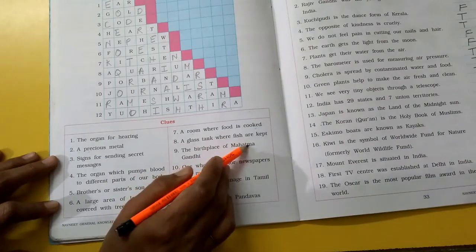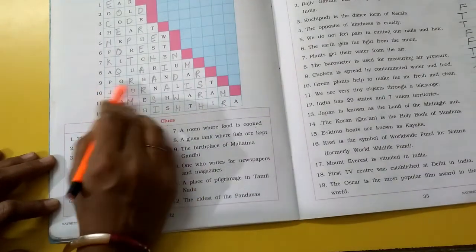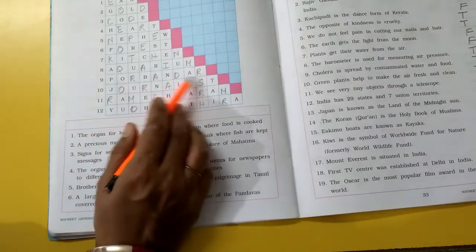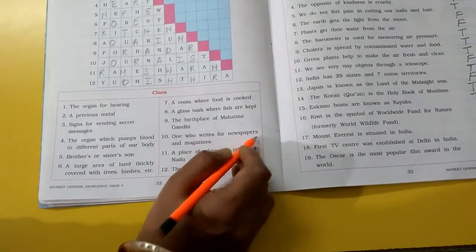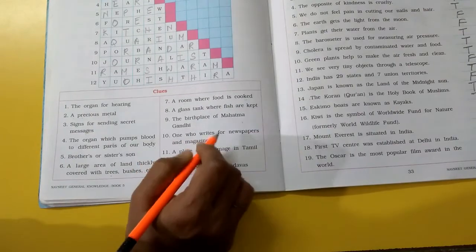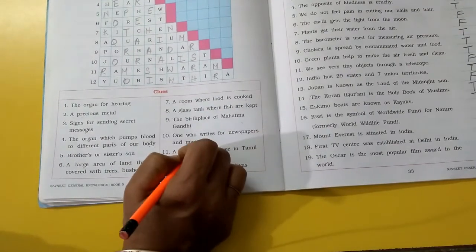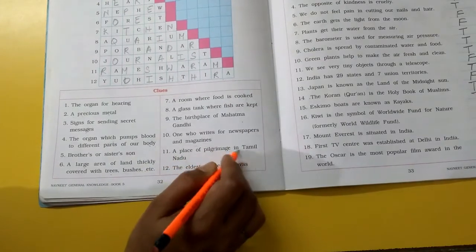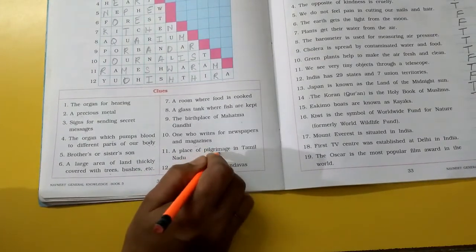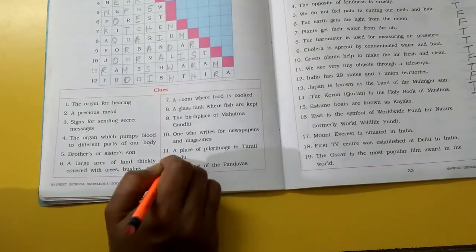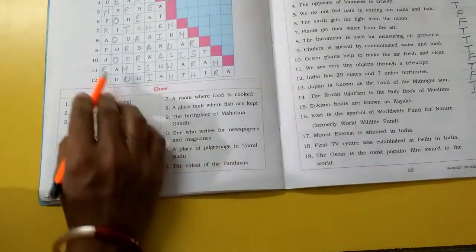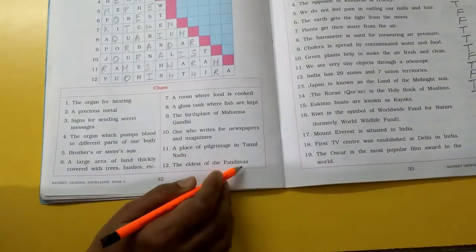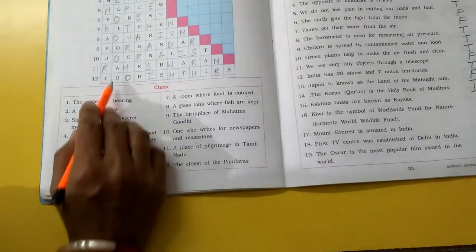The birthplace of Mahatma Gandhi. Porbandar. Jahan pe Mahatma Gandhi ka janam hua tha, that is Porbandar. One who writes for newspaper and magazine. Jo newspaper aur magazines likhte hain, use journalist kehte hain. A place of pilgrimage in Tamil Nadu. Rameshwaram. The eldest of the Pandavas. Pandava mein sabse bada Yudhishthir.